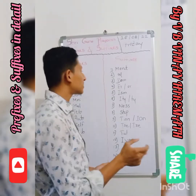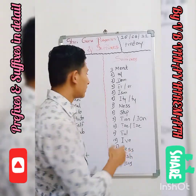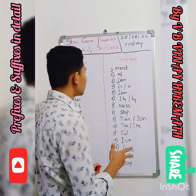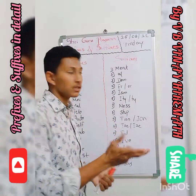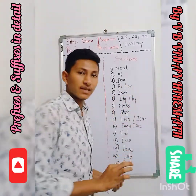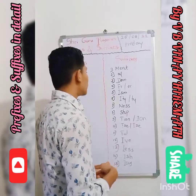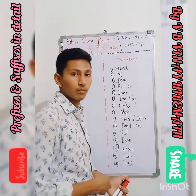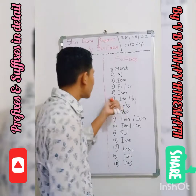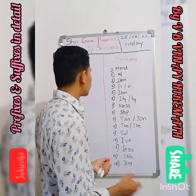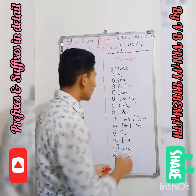The suffix '-er' or '-or': director, doctor, computer, operator, participant. The suffix '-ism' (I-S-M): symbolism, feminism, Hinduism, Buddhism. The suffix '-ity' or '-ty': quality, quantity, locality, integrity, unity.